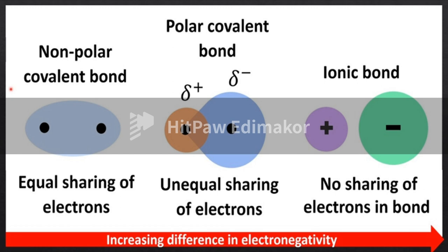Polar and non-polar are very important concepts. Polarity is nothing but the development of a small positive charge and a small negative charge due to the unequal sharing of electrons. In non-polar covalent bonds, there is equal sharing of electrons. In polar covalent bonds, there is unequal sharing of electrons. Equal sharing is non-polar; unequal sharing is polar.